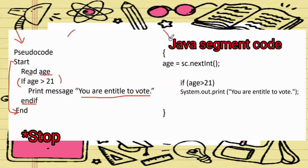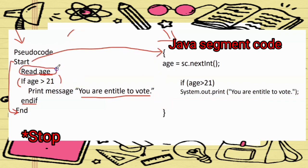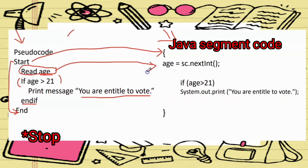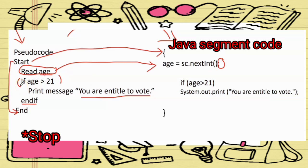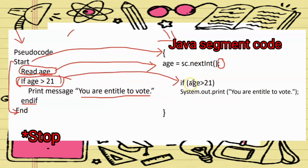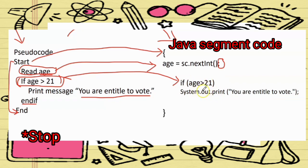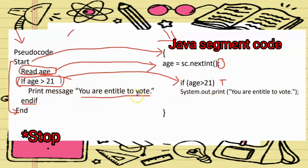Now how do you want to convert this pseudocode to Java segment code? For 'Start', use the open curly bracket. This is your input — convert to coding: age equal to sc.nextInt(), ending with a semicolon. The second line is the condition. Write the bracket: if (age > 21). If true, the computer checks and prints 'You are entitled to vote'.